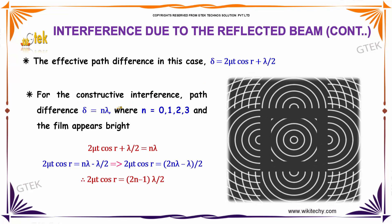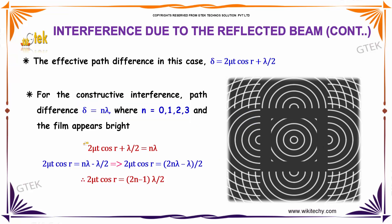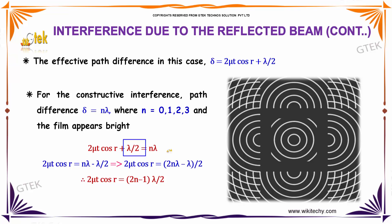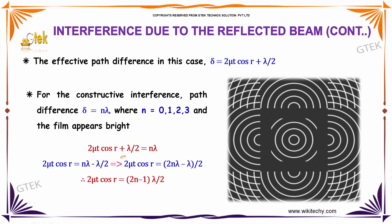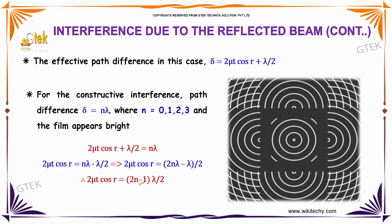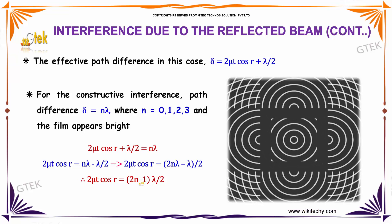For constructive interference, the path difference delta equals n lambda, where n equals 0, 1, 2, 3, and the film appears bright. So 2 mu T cos r plus lambda by 2 equals n lambda. Rearranging by moving lambda by 2 to the right side, we get 2 mu T cos r equal to (2n minus 1) into lambda divided by 2.